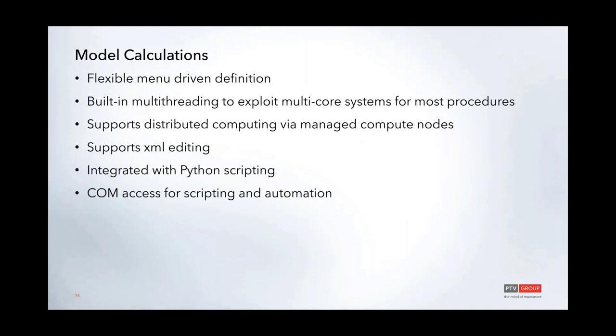Model calculations in vZoom are flexible, menu-driven, and support an XML interface. Most calculations are built with multi-threading — trip distribution, mode choice, matrix calculations, and such are all multi-threaded. They are also integrated with Python scripting, so you can call Python scripts in the model calculation procedures. Models typically have a series of vZoom calculations integrated with Python calculations.